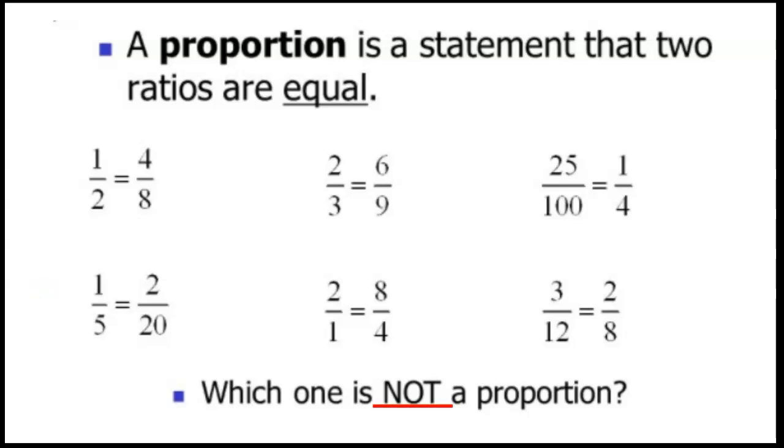We can determine proportionality by finding equivalent ratios. We know that we use multiplication or division to do that. So let's look for the relationship between one and four. We know that one times four is four and two times four is eight. Therefore, the relationship between these two ratios is times four. This is a proportion. Let's look at two-thirds and six-ninths. We know the relationship between those two ratios is times three. Two times three is six and three times three is nine. Let's try twenty-five hundredths and one-fourth. We know the relationship between these two ratios is to divide by twenty-five. Twenty-five divided by twenty-five is one and one hundred divided by twenty-five is four. All three of these are proportions.